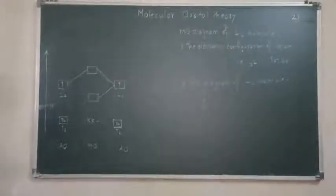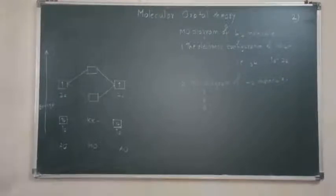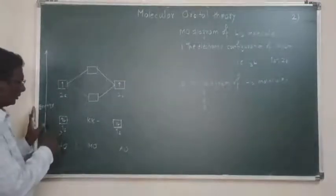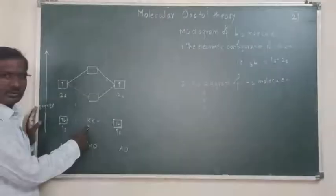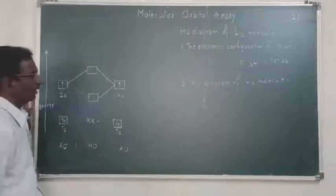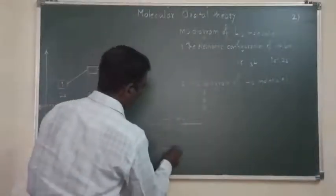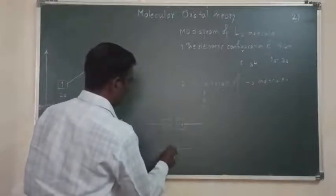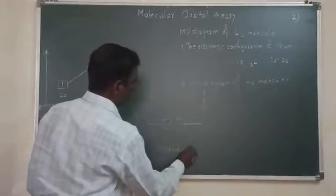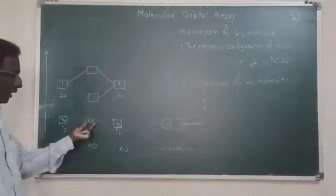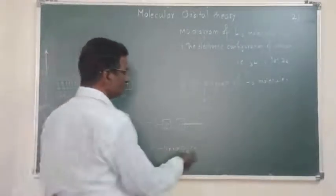Electrons are filled into molecular orbitals just like filling electrons in atomic orbitals. We draw the bonding orbitals, and we can write KK — or in place of KK, we can write the sigma and sigma-star notation, or simply write 'non-bonding.' Whatever you choose, all three options mean the same thing.